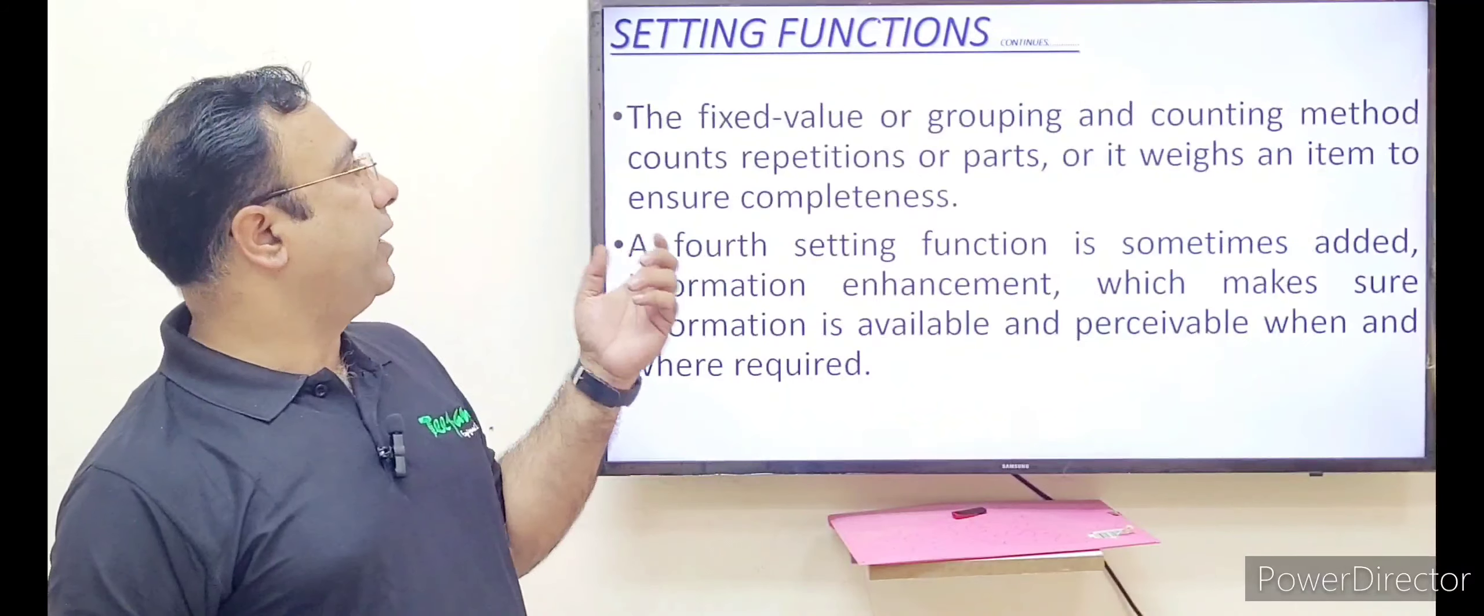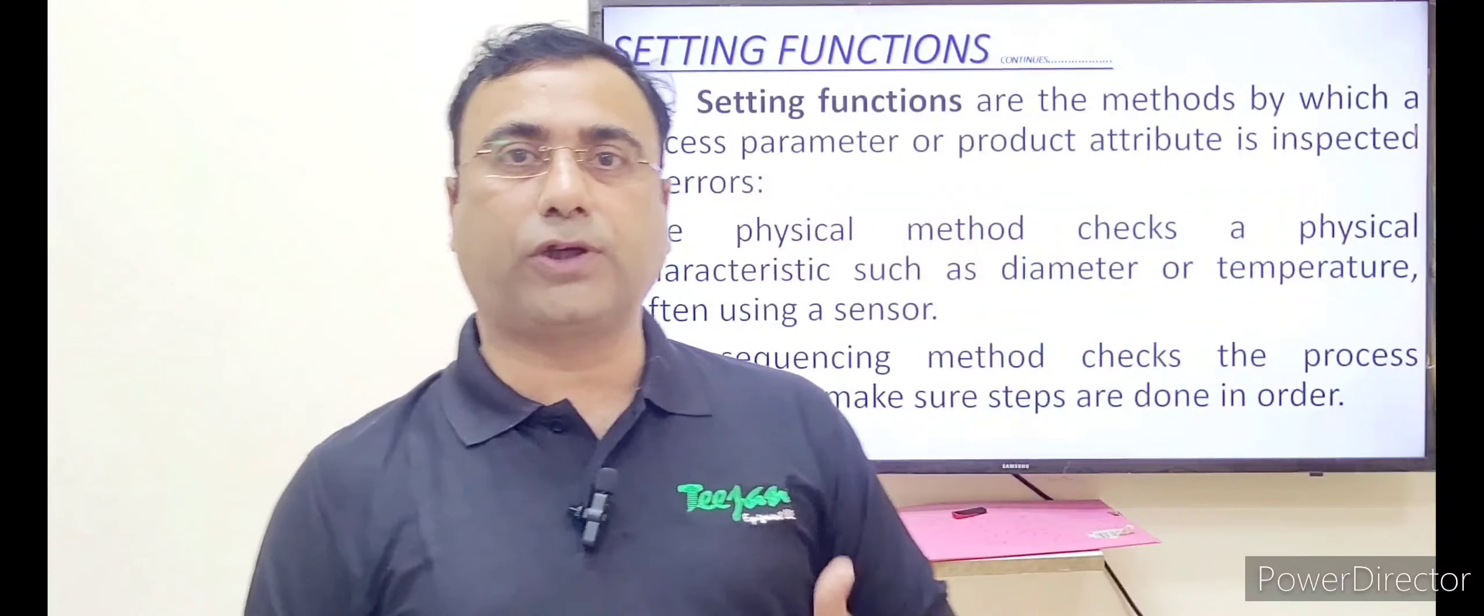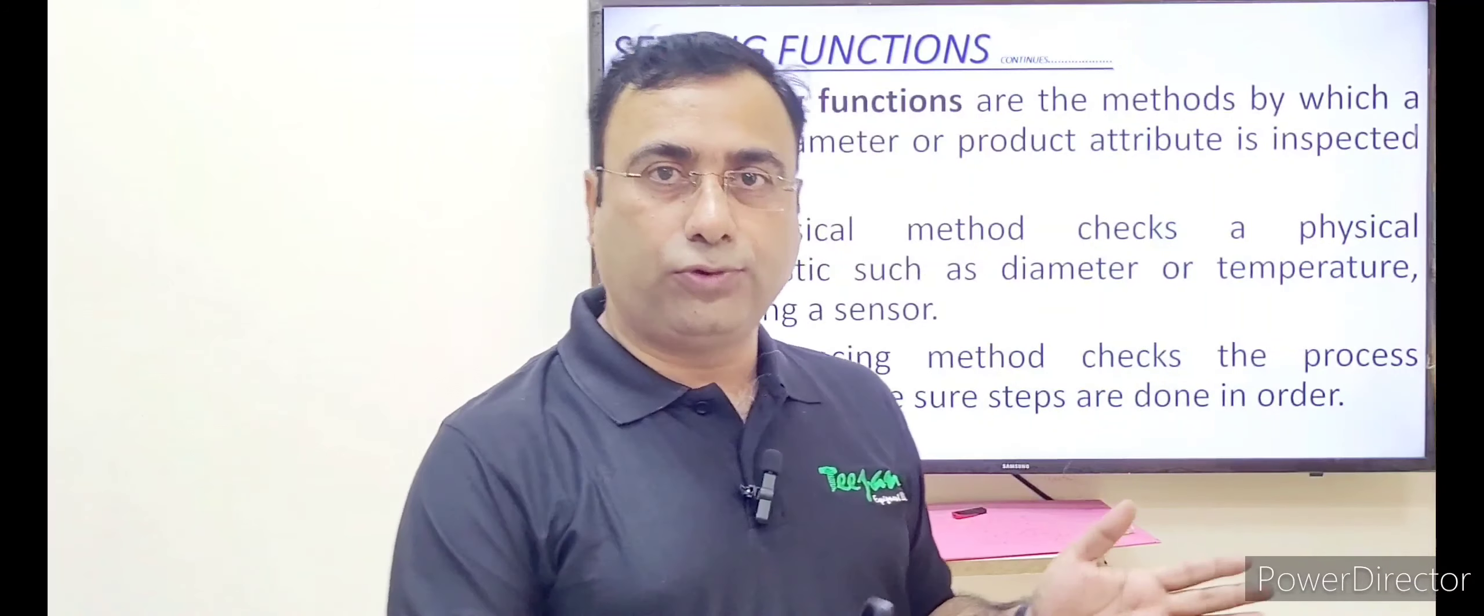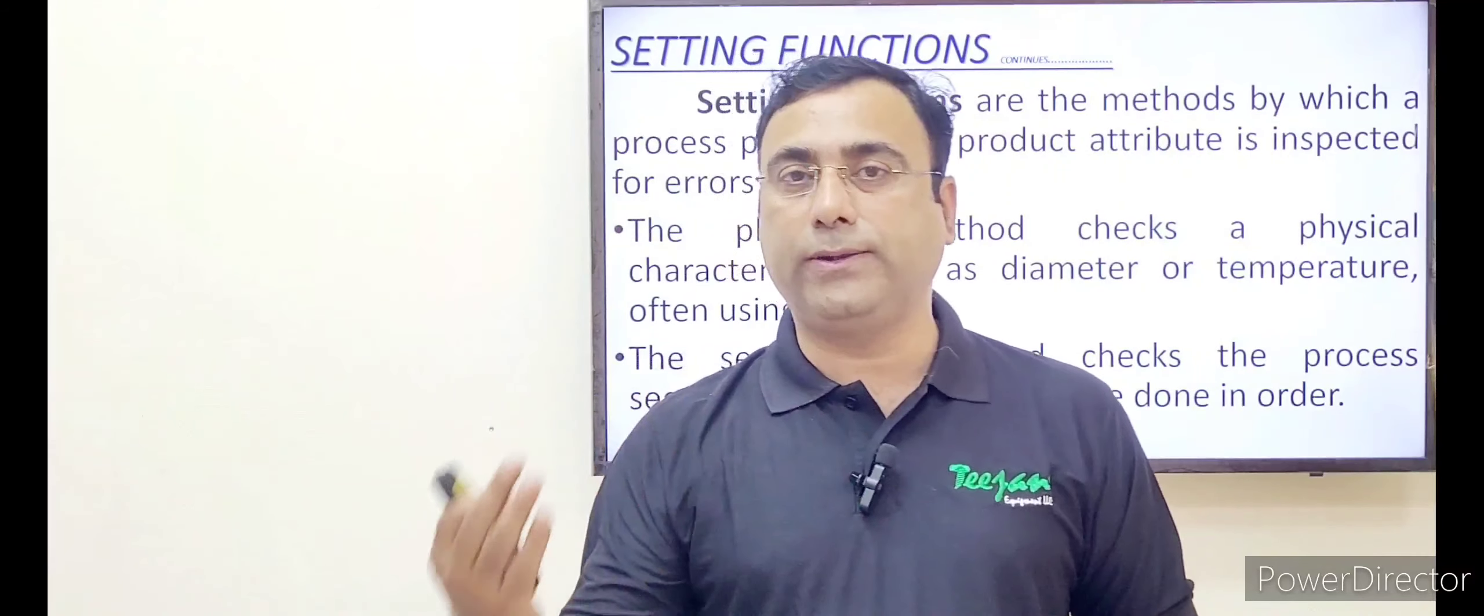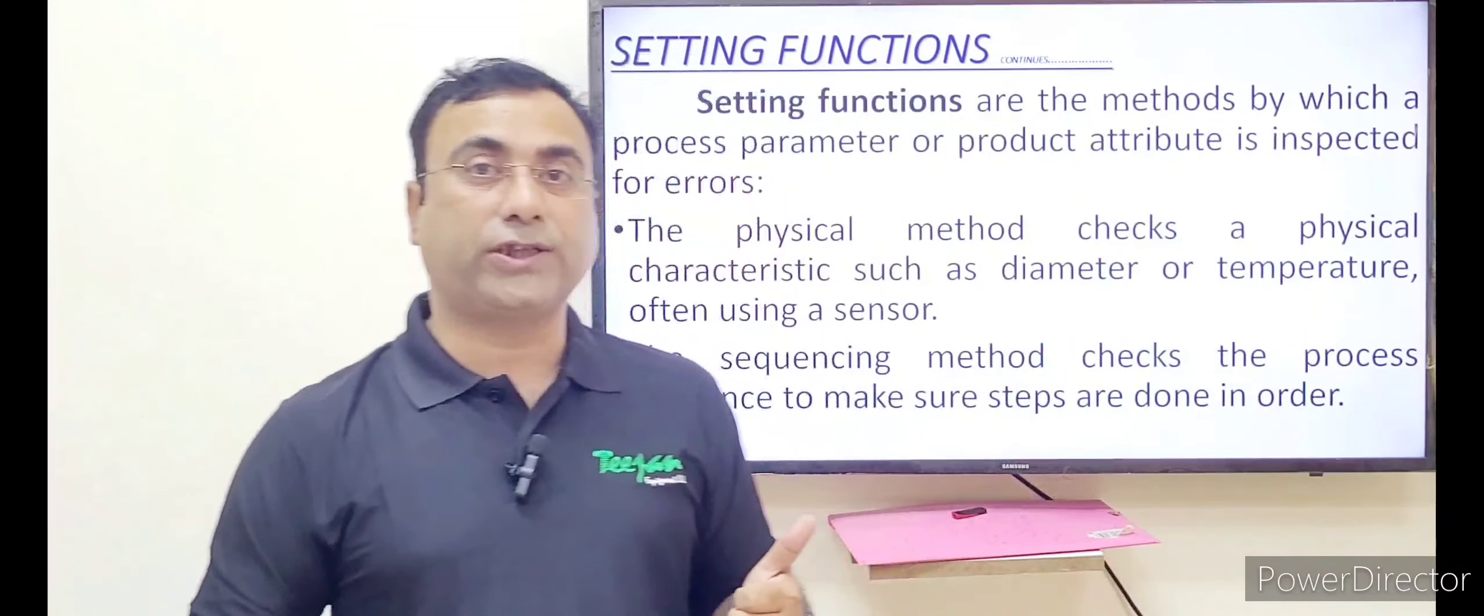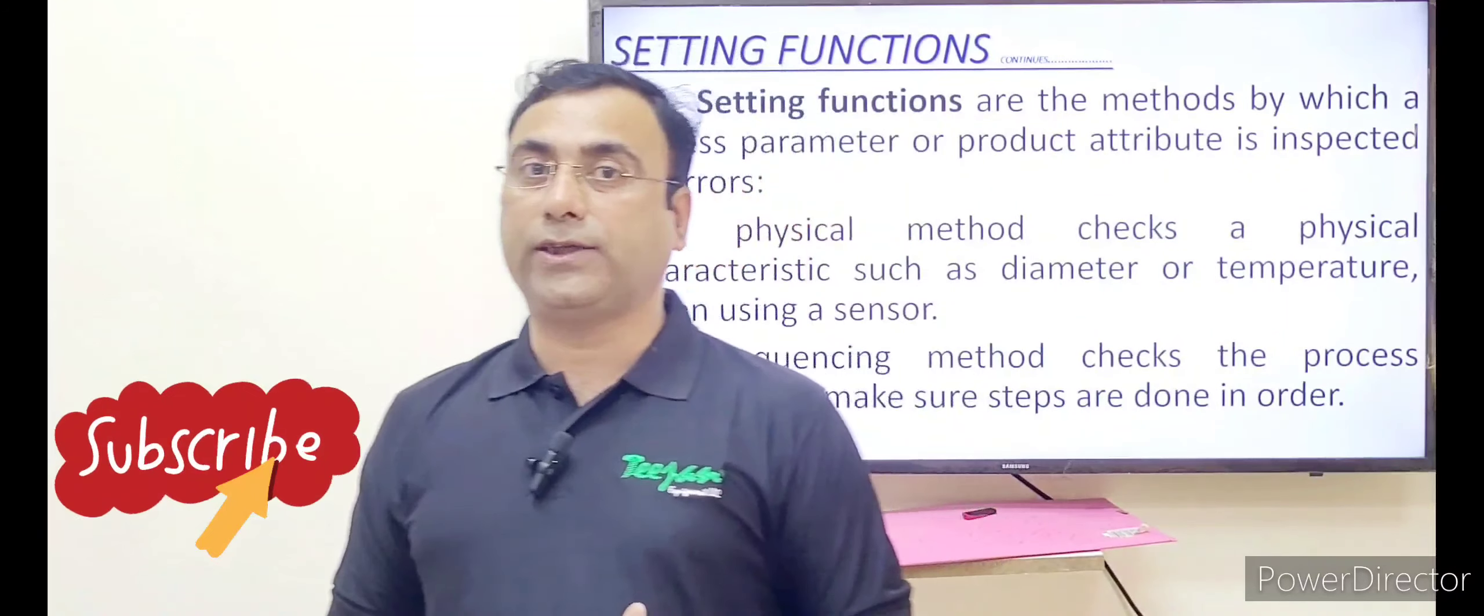Second one in that series is the sequencing method. Sequencing method is simply to check the order of the events. Like when you have done one job, what to be the next. Sometimes people in the working stage, the executives, they skip some of the process by thinking that this will not impact in the later stage. But sometimes it becomes quite expensive to correct that mistake. So we have to check the sequence of the job. And if you feel that the sequence is not necessary, this step is not necessary in that sequence, then you need to change your SOP.